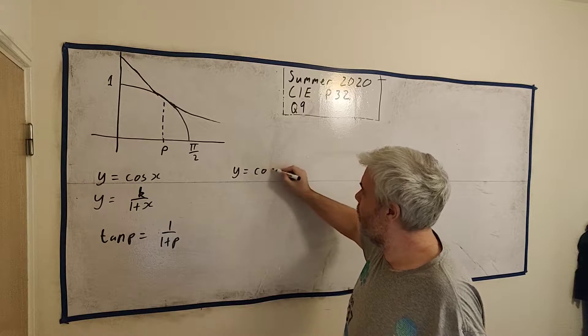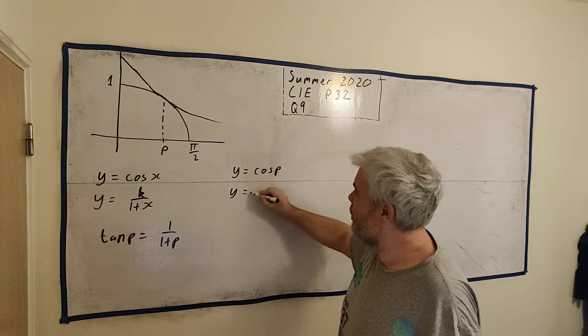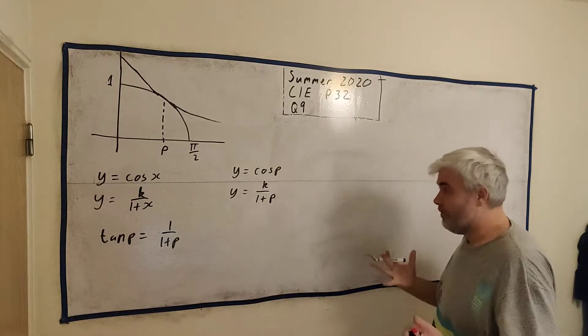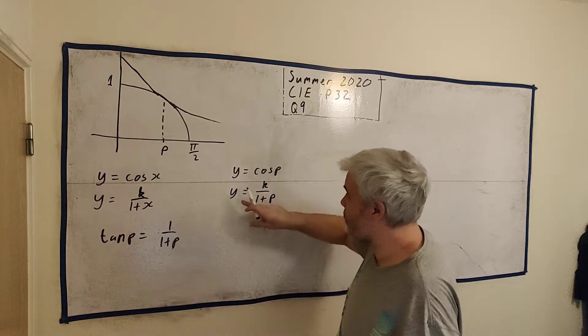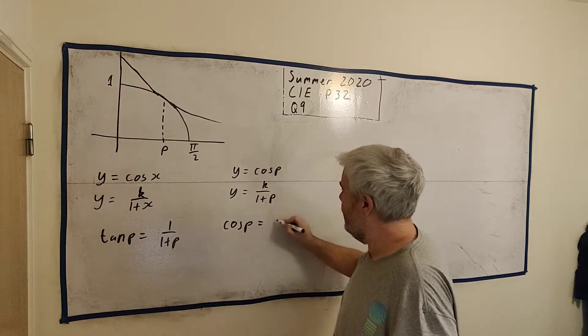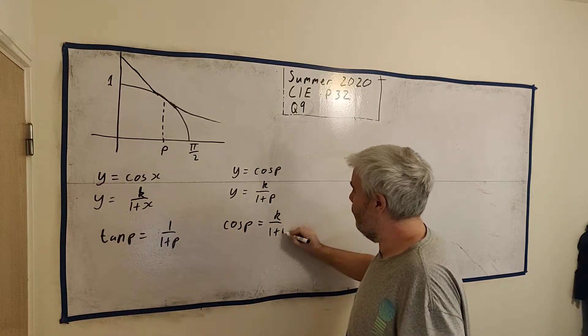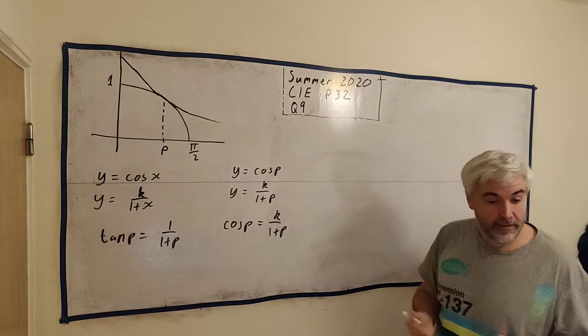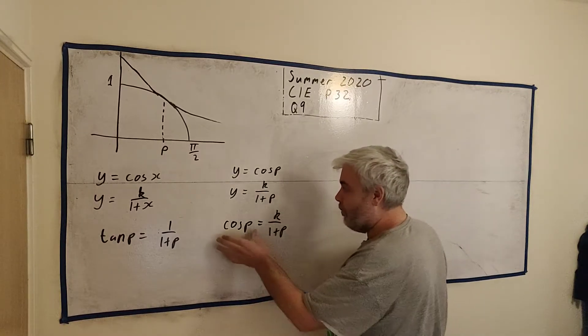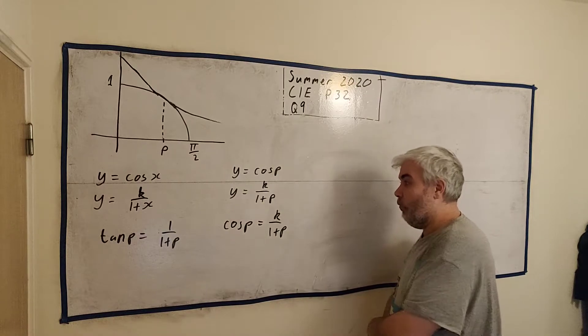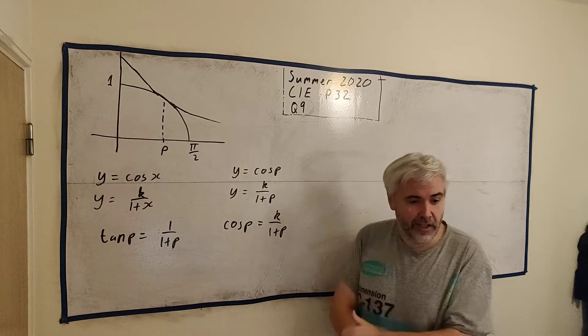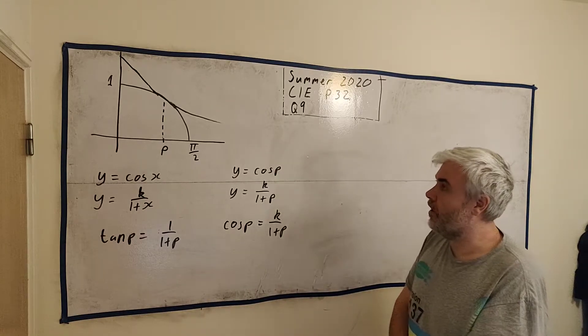That's y equals cosine of p and y equals k divided by 1 plus p. This is true and we can put these equal to each other. y equals y at this point, so cosine of p equals k over 1 plus p. Most students got to here and then they were a little confused because this is not the same as this but it's similar. A lot of students thought, well how do I change cosine into tangent maybe? Where does the k go? And they were stuck. This is probably one of the lowest scoring questions on this paper.